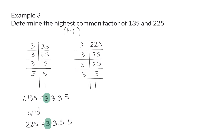Firstly, we can see that both values have one 3 as well as a second 3. The third 3 is only part of 135, and that means it is not common. Then, both of them have one 5, but the second 5 is only part of 225, and therefore not common. We are going to put these common values together to form our highest common factor. So our highest common factor will be 3 times 3 times 5, which is 9 times 5, giving us 45. This means that the biggest number that both 135 and 225 can be divided by is 45.